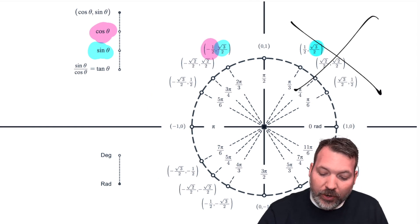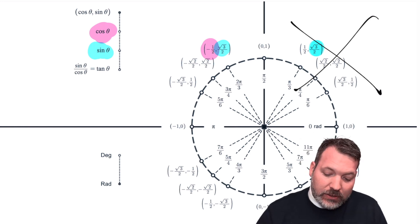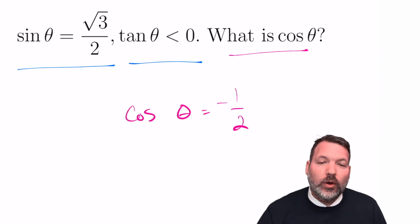Finally, if we know we're in quadrant 2 and we're interested in cosine theta, we want the x-coordinate of this same point. And so that tells us that when sine theta is root 3 over 2 and tangent theta is negative, cosine theta must be negative 1 half.